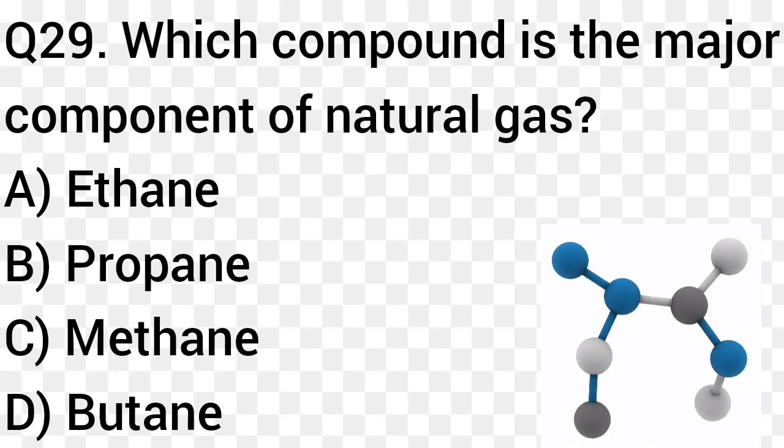Question number 29. Which compound is the major component of natural gas? Option A: Ethane. Option B: Propane. Option C: Methane. Option D: Butane. The right answer is option C, Methane.